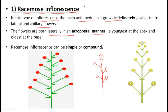Acropetal arrangement means young flowers are towards the tip (apex) and old flowers are present towards the base of the peduncle. So the newest flowers are near the apex and the oldest flowers are towards the base. This arrangement of flowers is called acropetal — youngest at the apex and oldest at the base.